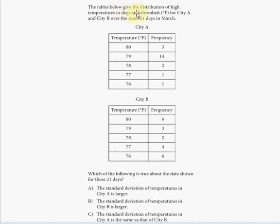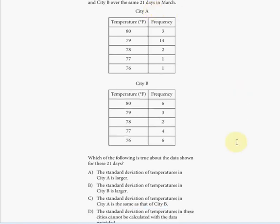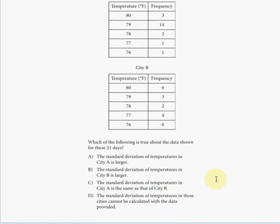The tables below give the distribution of high temperatures in degrees Fahrenheit for city A and city B over the same 21 days in March. Which of the following is true about the data shown for these 21 days? We're given temperatures and frequency. Three days, for example in city A, had a temperature of 80 degrees and 14 days saw 79 degrees. The same logic applies for city B.